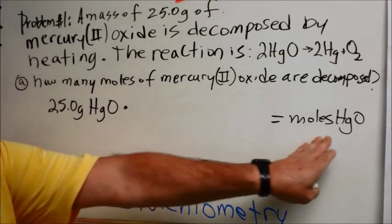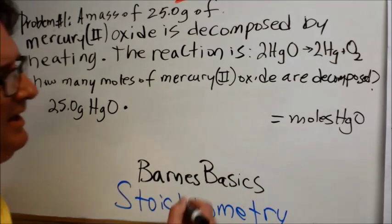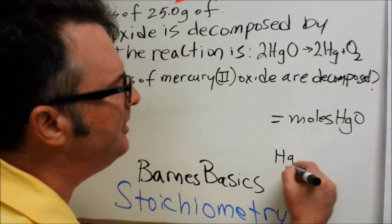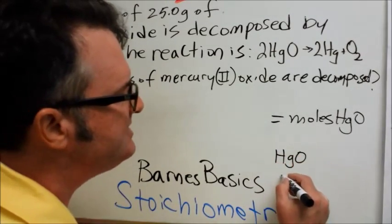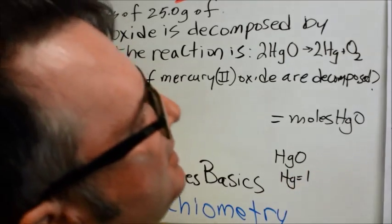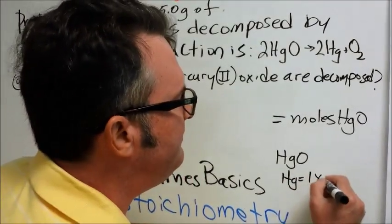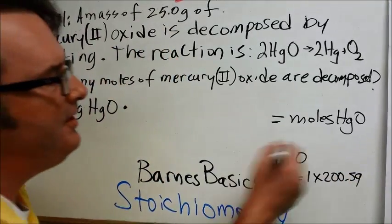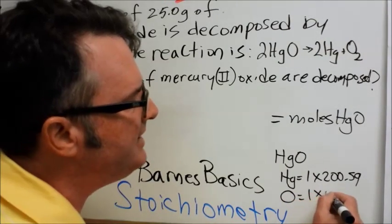Well, what is the molar mass of mercury oxide? When we look at a periodic chart, we see that mercury weighs 200.59 grams per mole, and oxygen, we only have one atom of that, is 15.99 grams per mole.